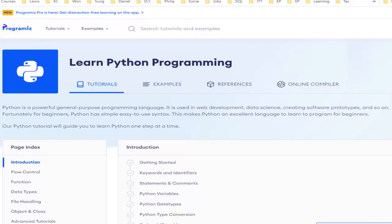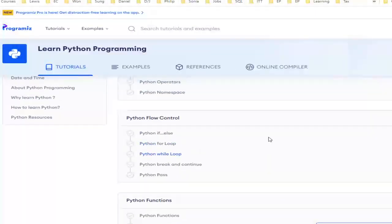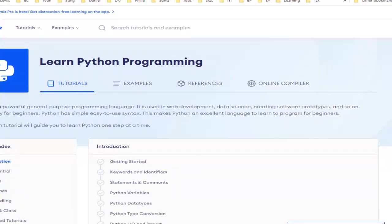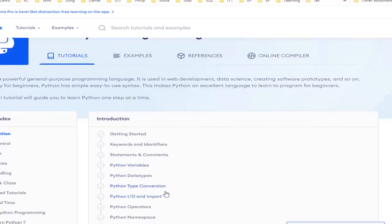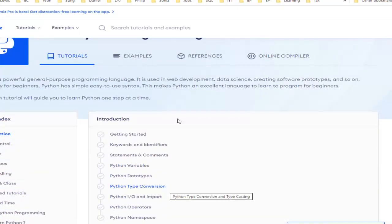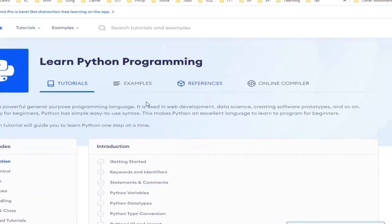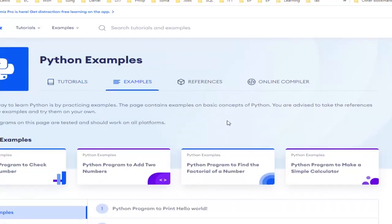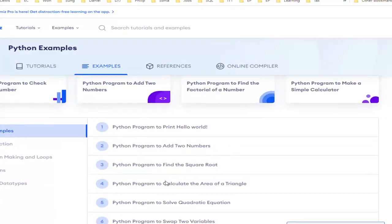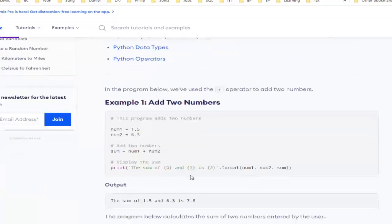There's a bunch of things that may be useful for you, like statements and comments, variables, data types. It goes through the whole thing, but it's also nice to see some examples posted here. Here is a hello world, how to add two numbers. If you click on them, it gives you the code with comments on why it's doing what it's doing.